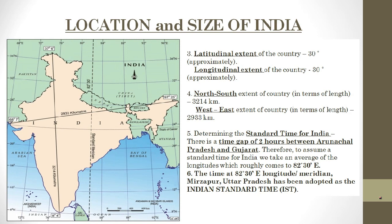Now, what do we mean by latitudinal extent and what do we mean by longitudinal extent? As the word 'extent' itself suggests — expanse, extension of something. So if we attach latitude to the word extent, it means what is the length in which India extends in terms of degrees.